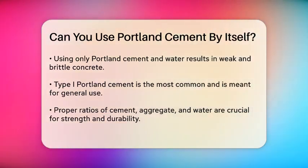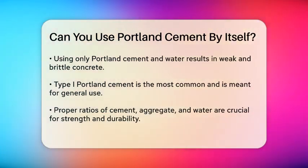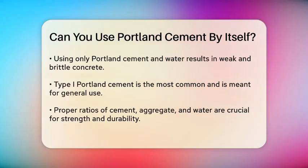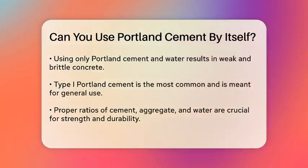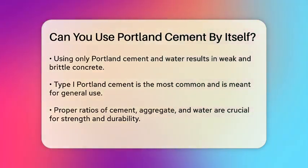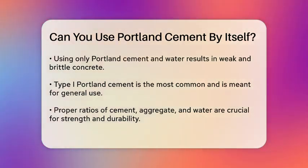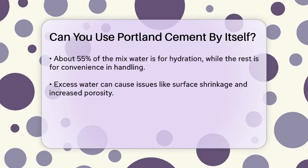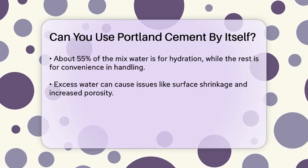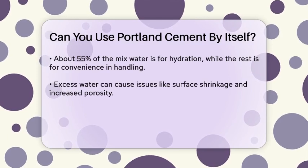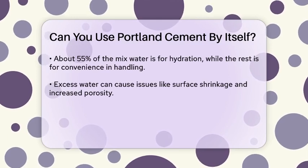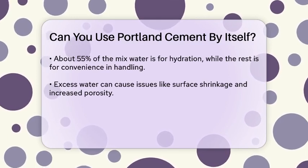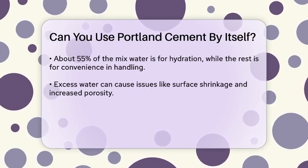For instance, Type I Portland cement, which is the most common type, is designed for general purpose use. It needs to be combined with aggregate and water to achieve the desired strength and durability. The ratio of cement to aggregate to water is critical and is typically specified in the concrete mix design.